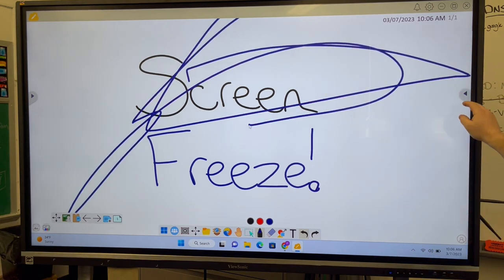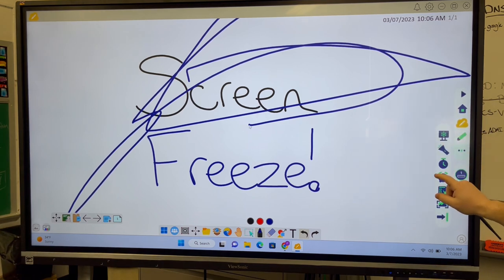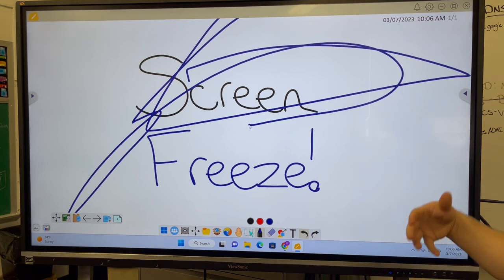So once again, Screen Freeze. Tap the sidebars, three dots, snowflake icon. Once you get the bar, it's active. And once you click the X, it's inactive.